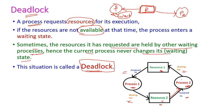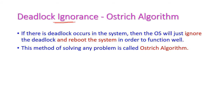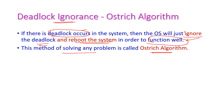That means the process is waiting for a resource, and this particular resource is already assigned to some other waiting process. Hence, this particular process never changes its waiting state — this situation is called deadlock. Deadlock ignorance means if deadlock occurs in the system, the operating system will just ignore the deadlock and reboot the system so that the system will function well. If deadlock occurs, the OS will simply ignore the deadlock — this method of solving the problem is called the ostrich algorithm.